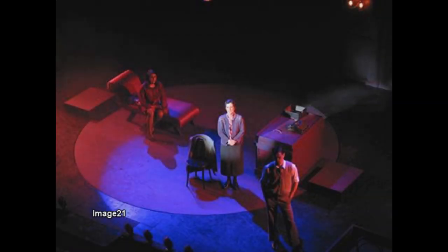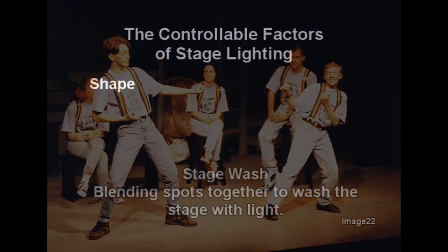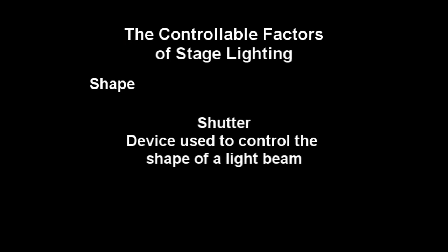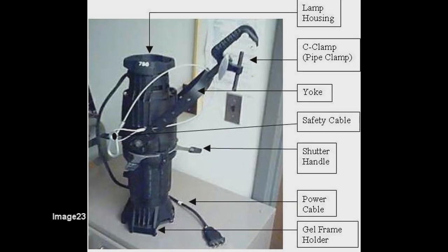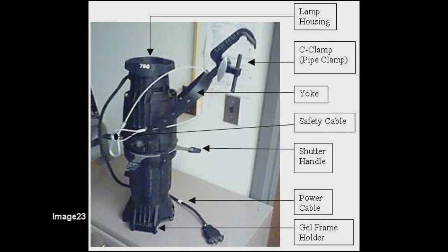Another important controllable factor of stage lighting is the shape of the light. The standard shape a light beam takes is a round spot, so that individual spots can be blended together to create what is referred to as a stage wash. But there are times when the shape of a light must be changed for either technical or aesthetic reasons. One way to control the shape of light is through the use of shutters. Some instruments, like the ellipsoidal spotlight, have shutters installed in the instrument itself, typically used to change the shape of the spot so the light will not spill onto an element of the stage in a distracting way.